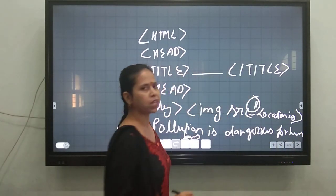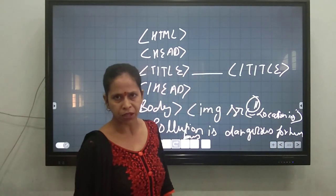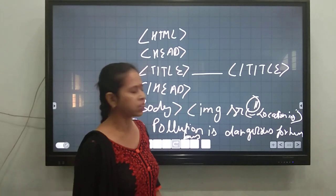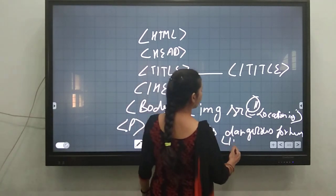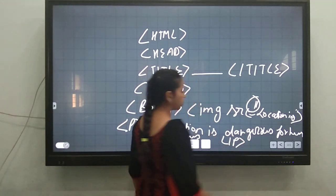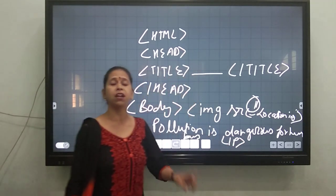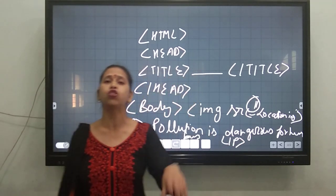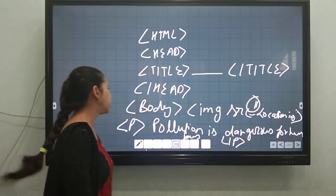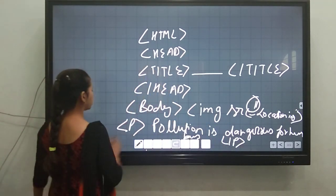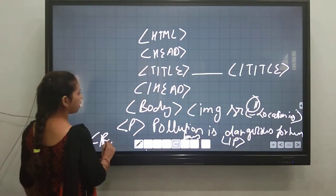Whatever statement you want to give related to your image, you can add it. And then the paragraph tag needs to be closed. Again, I am repeating — the paragraph tag needs to be closed. And after that, close the body tag.